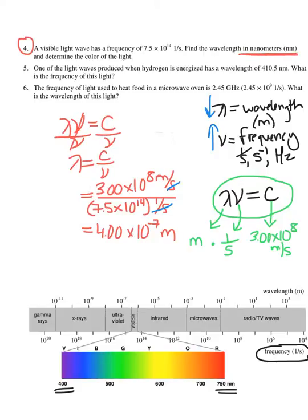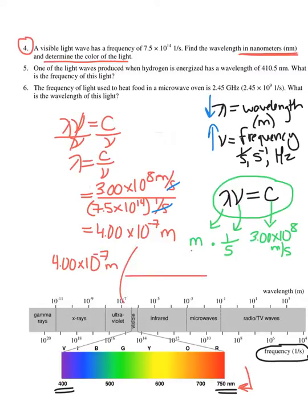Why did they ask for nanometers? Because the problem also says to determine the color of the light, and if I go back to the spectrum, we are really looking at nanometers for light color. So I just have a conversion to do: to go from meters to nanometers, there are 10 to the 9th nanometers in one meter. Setting this up with dimensional analysis, I need meters on the bottom and nanometers on top. There's 1 times 10 to the 9th nanometers in one meter, and when I multiply this out, I get 400 nanometers.